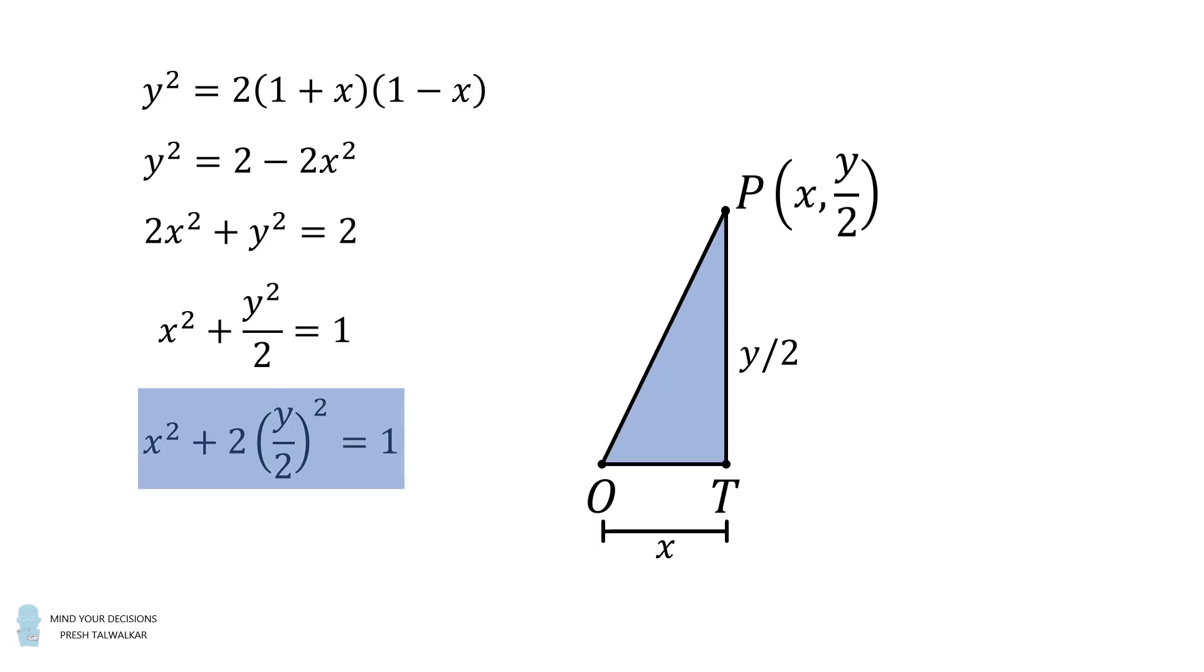And from here, we can see that this is the equation of an ellipse. Therefore, the locus of P is a semi-ellipse. It'll be the upper half of the ellipse described by this equation. This is the analytic solution.